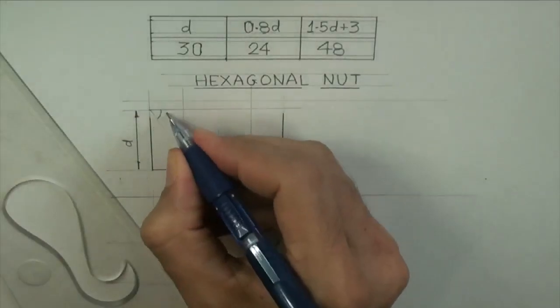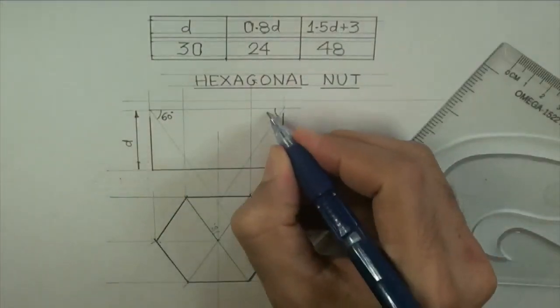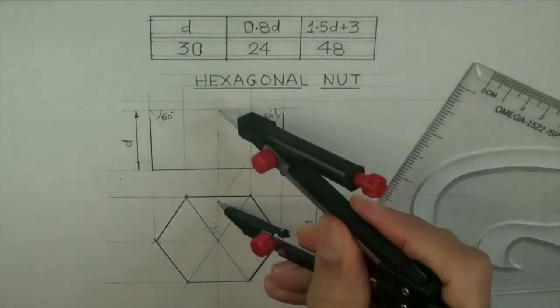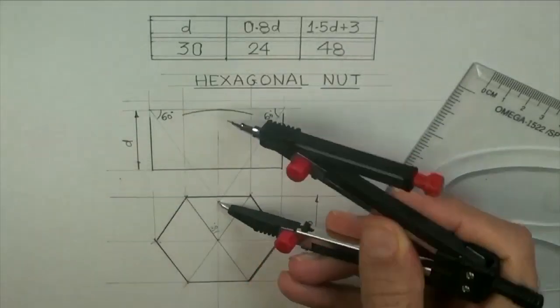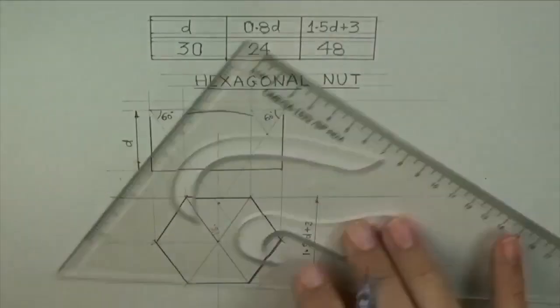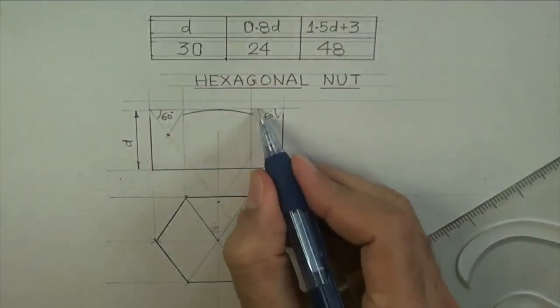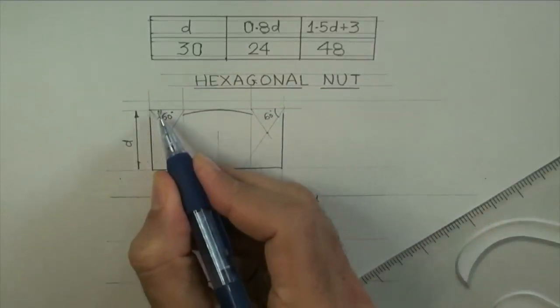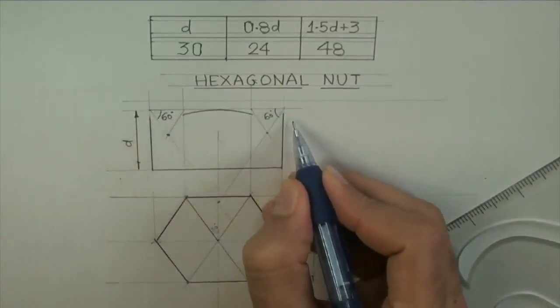Now we will take 60-60 degree from both this corner, wherever it will meet. From that point, we can take radius and we can draw this arc. Now, again we can take 60-60 degree from the corner, again we can draw arc, but before that, we need to draw chamfering.